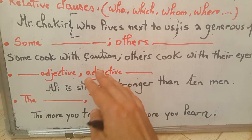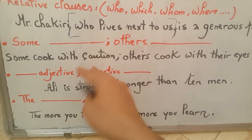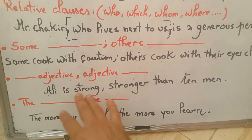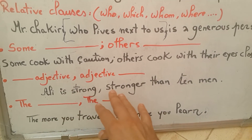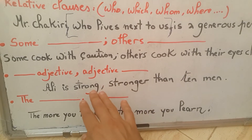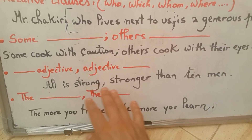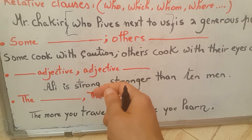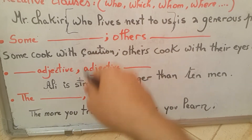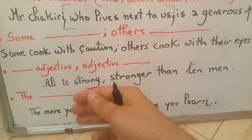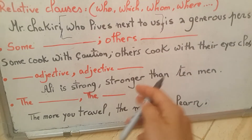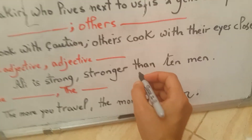There is also a nice trick that writers use: repeating certain words for emphasis. For example, 'Ali is strong, stronger than ten men.' As you can see, there is the repetition of 'strong' and 'stronger' because the writer wants to focus the reader on that word.